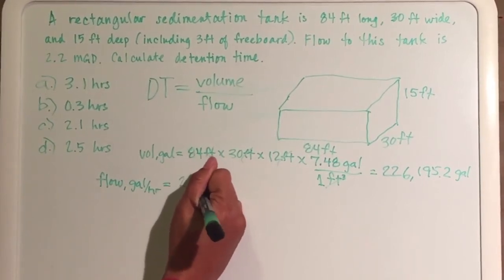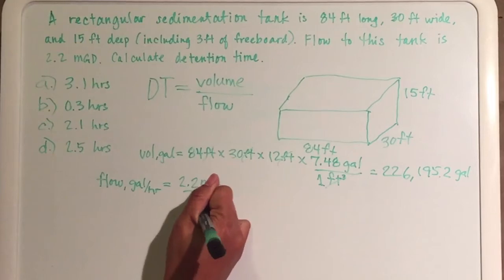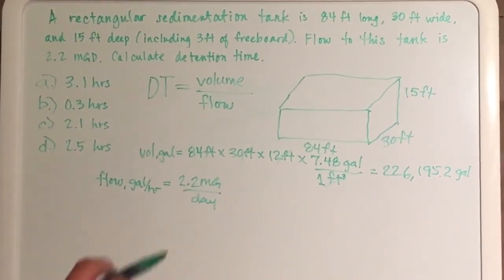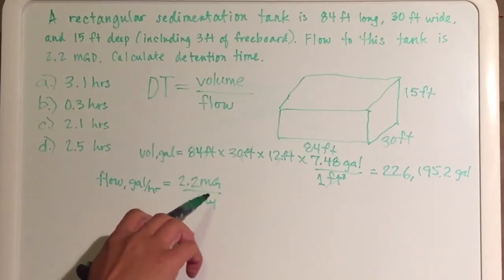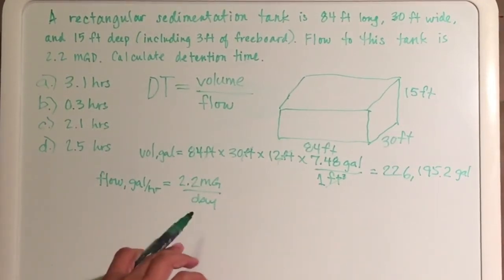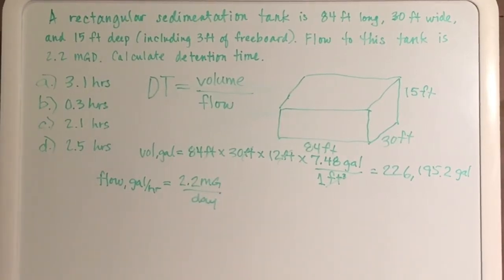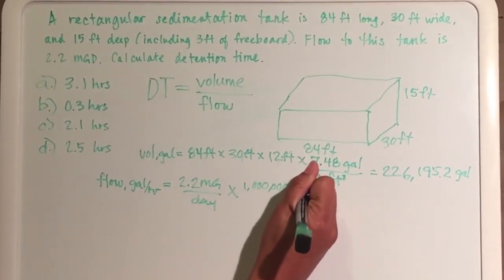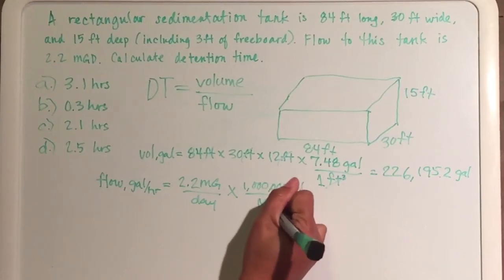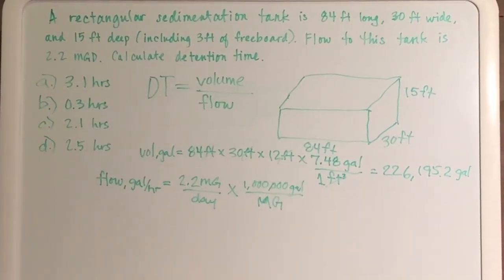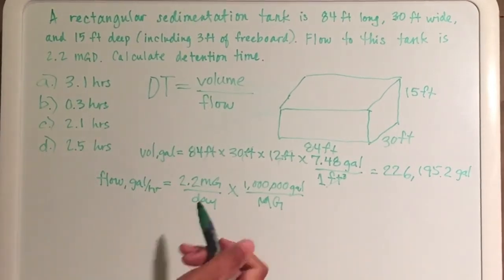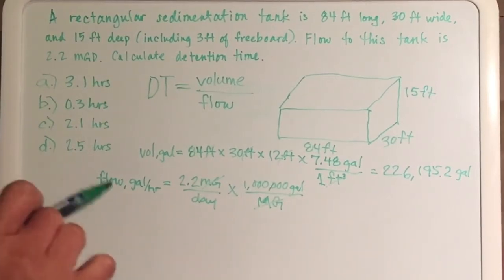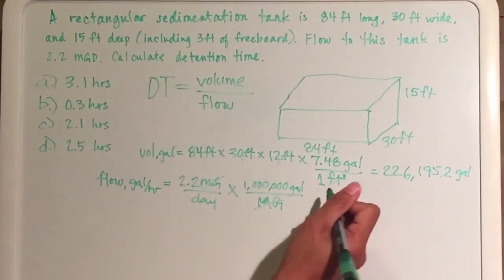So 2.2 million gallons per day. Anytime there's a 'per' that means it happens over the line or on one side of the dividing line, and the thing after 'per' is on the other side of that dividing line. So there's a million gallons per mg - that gets rid of my million gallons.